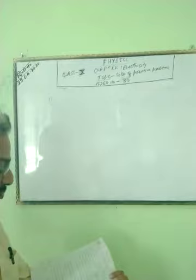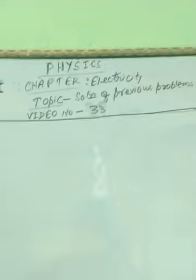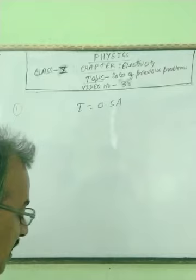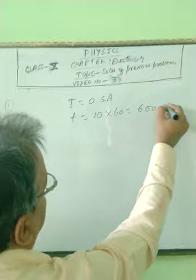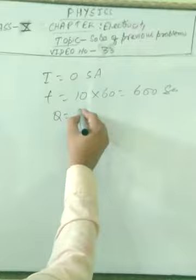First one: a current of 0.5 Ampere, I = 0.5 Ampere, is drawn by a filament of an electric bulb for 10 minutes. Time is equal to 10 minutes means 10 into 60, that is 600 seconds. Find the amount of electric charge Q that flows through the circuit.